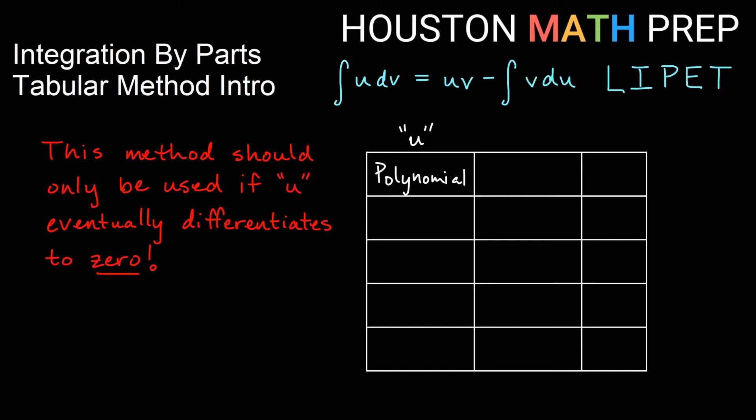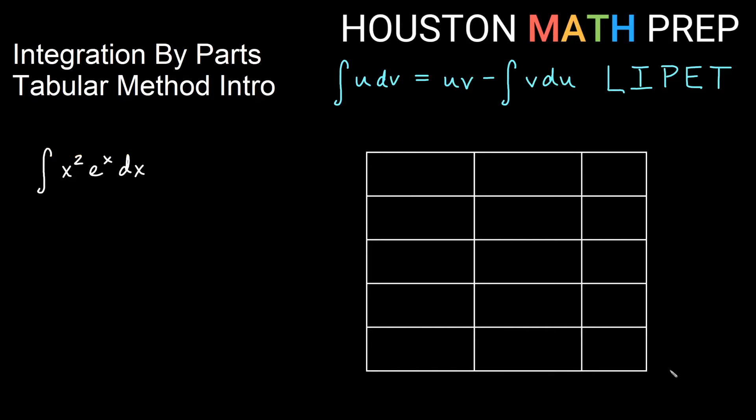Let's take a look at an example of how to use the tabular method. So here if I am choosing u and dv, since this is a polynomial and this is an exponential, I would choose my u to be x squared. And so then my dv is going to be e to the x.